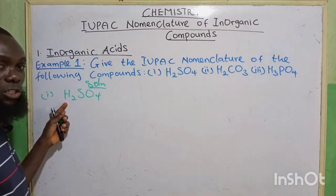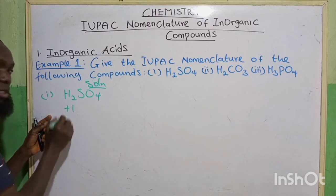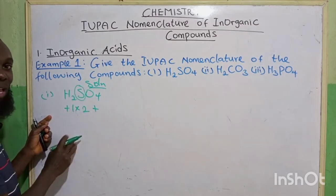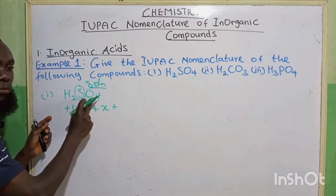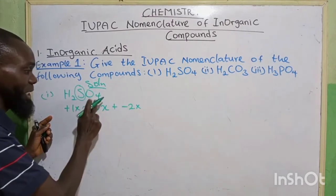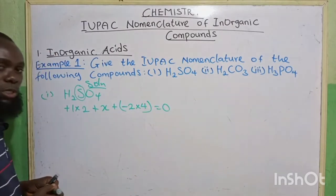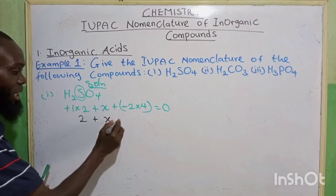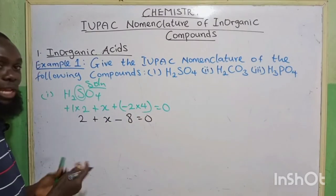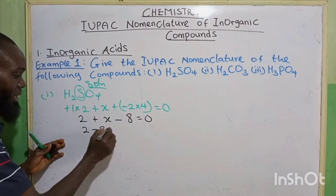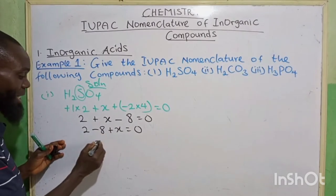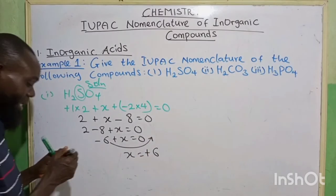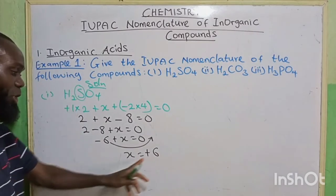The valency of hydrogen — if you look at our previous class — is plus 1, multiplied by 2, plus the center element, which we call X, plus the valency of oxygen, minus 2, multiplied by 4, is equal to 0. So 1 times 2 gives 2, plus X, plus minus 2 times 4 gives minus 8, equals 0. Collecting like terms: 2 minus 8 plus X equals 0, giving minus 6 plus X equals 0. So X equals plus 6, meaning the oxidation number of sulfur is plus 6 in this compound.